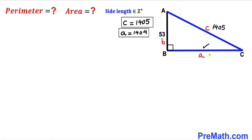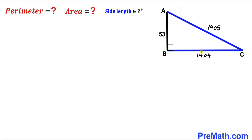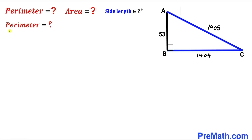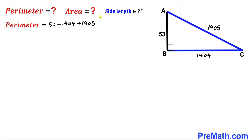So all three sides are: a = 1404, c = 1405, and b = 53 units — all positive integers as required. Now we calculate the perimeter of triangle ABC, which is the sum of all three side lengths: 53 + 1404 + 1405 = 2,862 units.